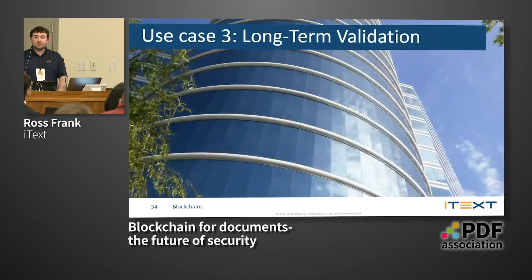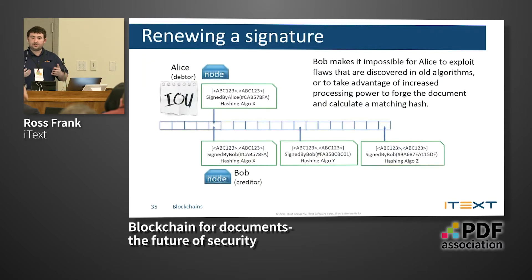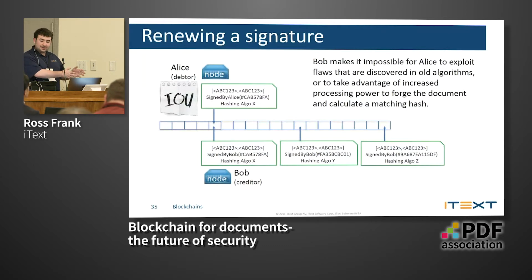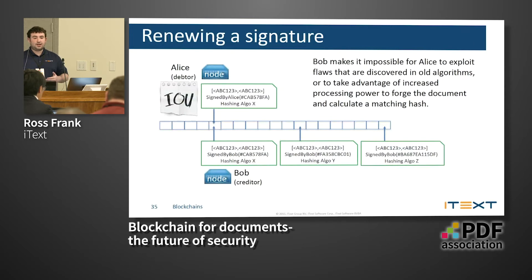Another big use is long-term validation. Currently for validation you have to go to a server, and PDF supports long-term validation to include that inside the PDF. One challenge is certificates that are revoked or expired. With blockchain it's possible to renew a signature — if there's an error in the hashing algorithm, you can re-sign it and anything previously is invalidated. The file never changes because the signature is all on the blockchain, so you don't have to worry about a file with an incorrect signature that could be exploited.